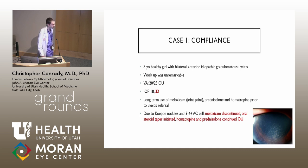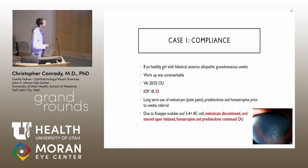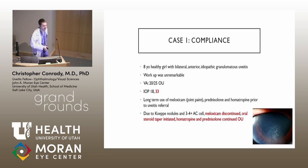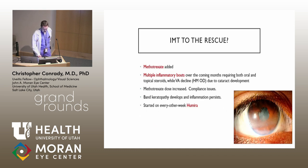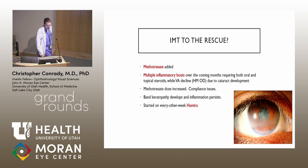We continued homatropine and prednisolone through the anterior chamber inflammation. This is actually a photograph from her clinical exam — with all these KPs here, you can't even appreciate the cell. We're talking about a significant amount of inflammation despite pretty frequent use of prednisolone, even meloxicam. After starting the oral steroid taper, we did an infectious rule-out to make sure none of this was infectious. Workup was unremarkable, so we quickly added methotrexate so we could taper the steroids.